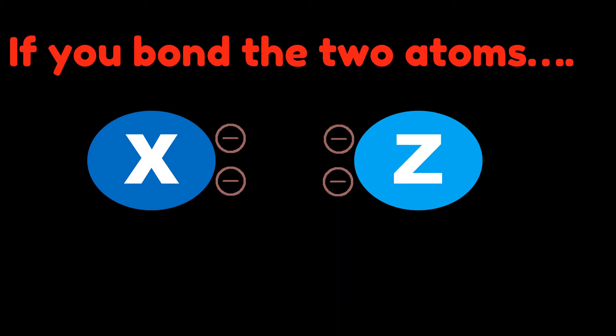We'll keep today's video simple, so we're going to imagine atoms to make our understanding a lot easier. So, we have X-atom and Z-atom. Each has only two valence electrons. If we bond the two atoms, we create a double bond between them.